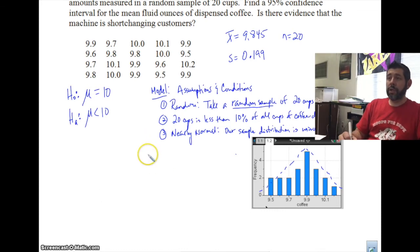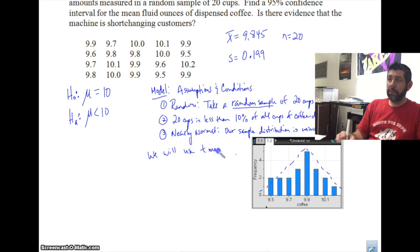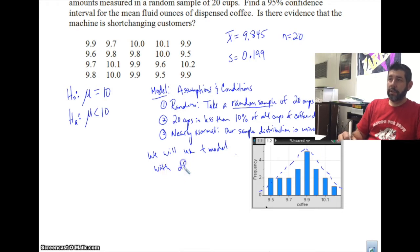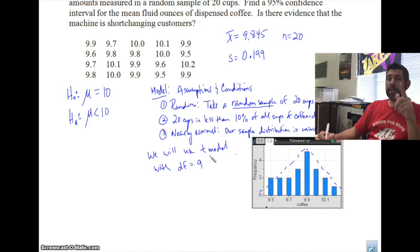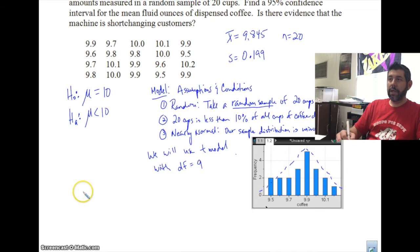Now that we've checked the conditions, we will use a T model with 19 degrees of freedom — because degrees of freedom is N minus 1, so 20 minus 1 equals 19.